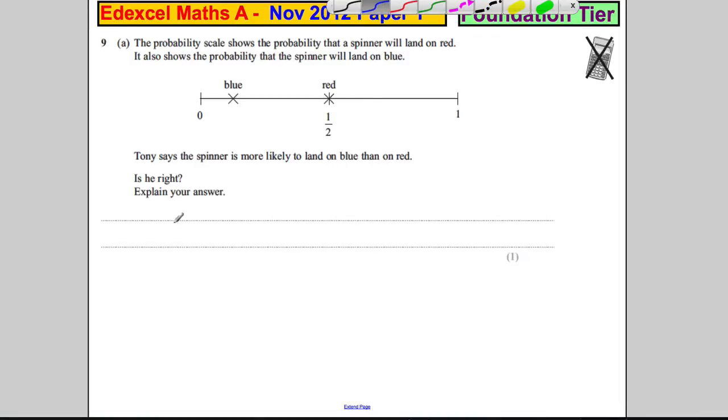Well, no, he's not right because red is 50-50 and blue is less than 50%. Red is 50%, you could say, and blue is less than 50% chance.